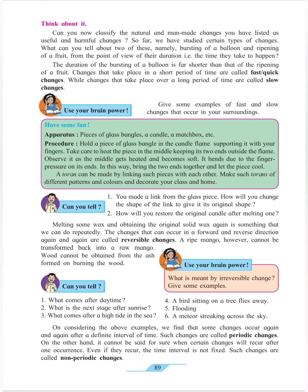Next are periodic changes and non-periodic changes. Some changes occur again and again after a definite interval of time — those are called periodic changes. Some changes do not occur after a fixed period of time — those are called non-periodic changes. For example, a chicken requires 21 days to hatch from an egg — that is a periodic change. The blowing of wind is a non-periodic change because it can happen anytime, anywhere, and not at a fixed period.